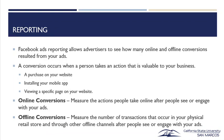Facebook ads reporting allows advertisers to see how many online and offline conversions resulted from your ads. A conversion occurs when a person takes an action that is valuable to your business — a purchase on your website, installing a mobile app, or viewing a specific page. Online conversions measure the actions people take online after seeing or engaging with your ads, whereas offline conversions measure transactions that occur in your physical retail store and other offline channels.